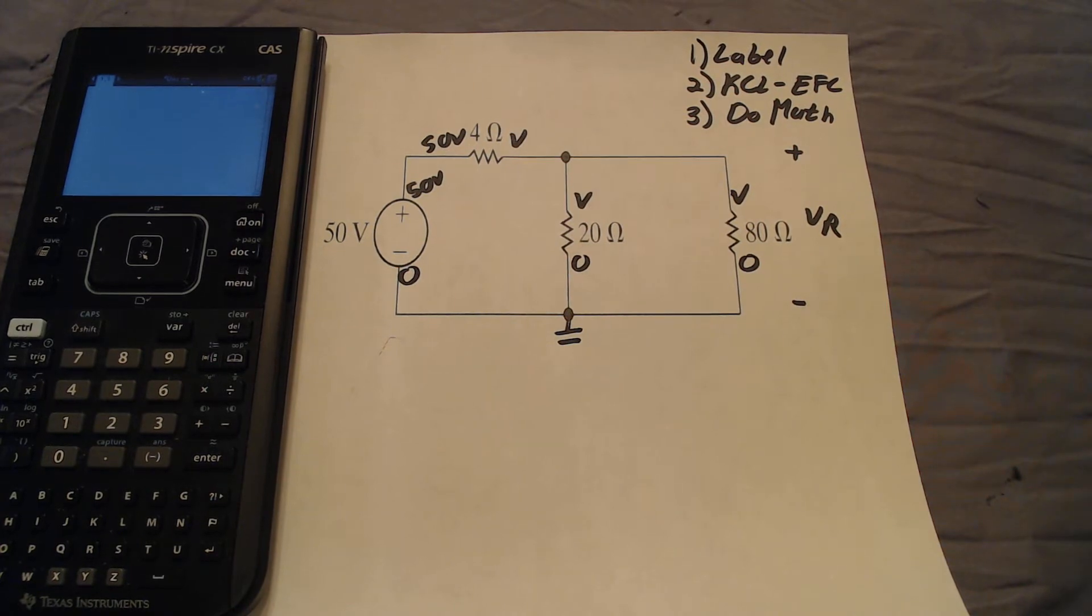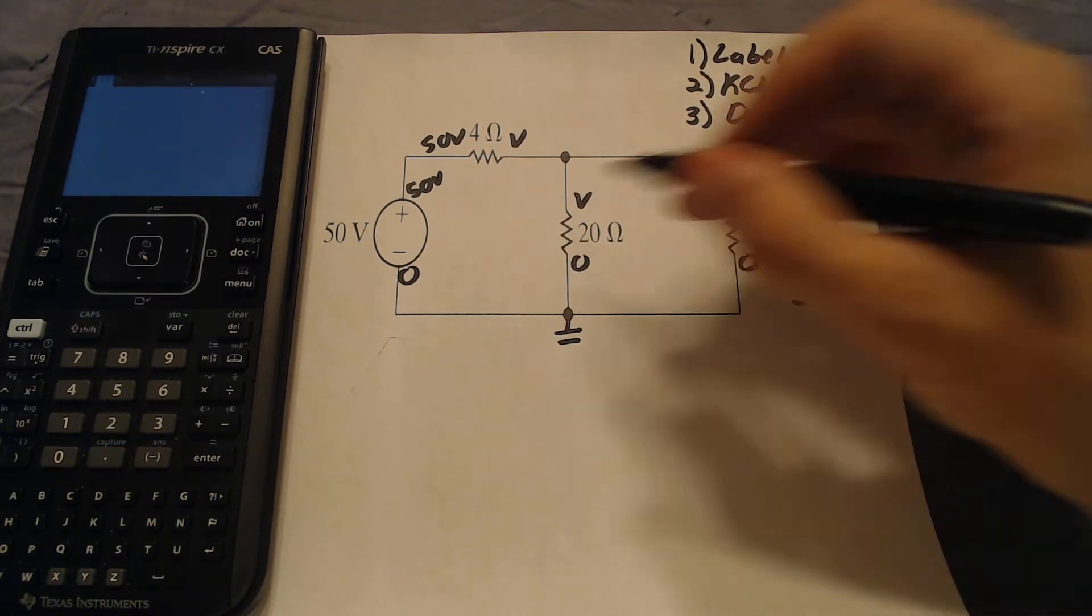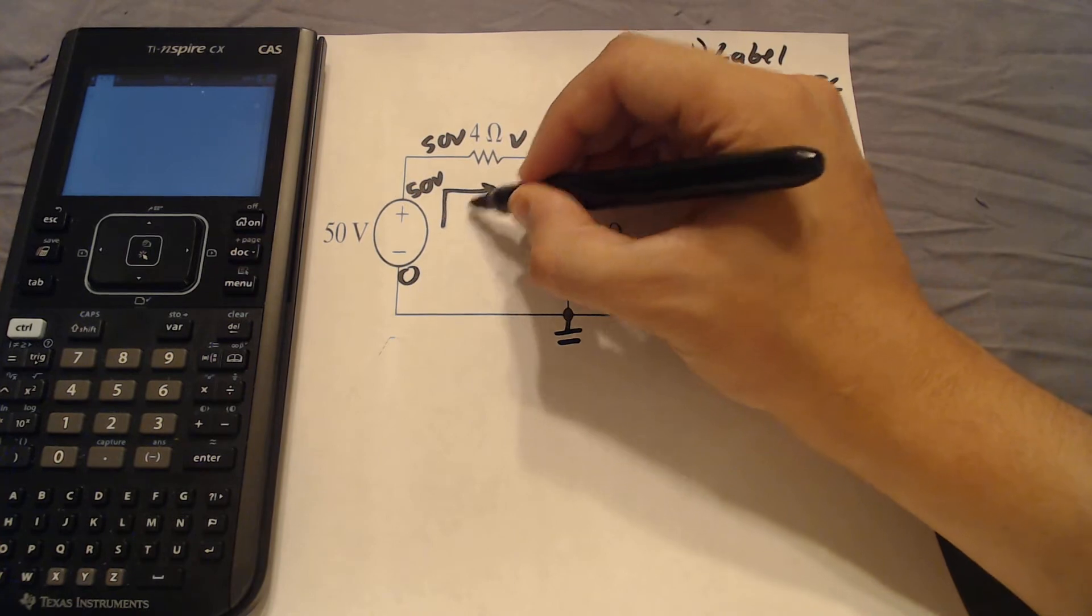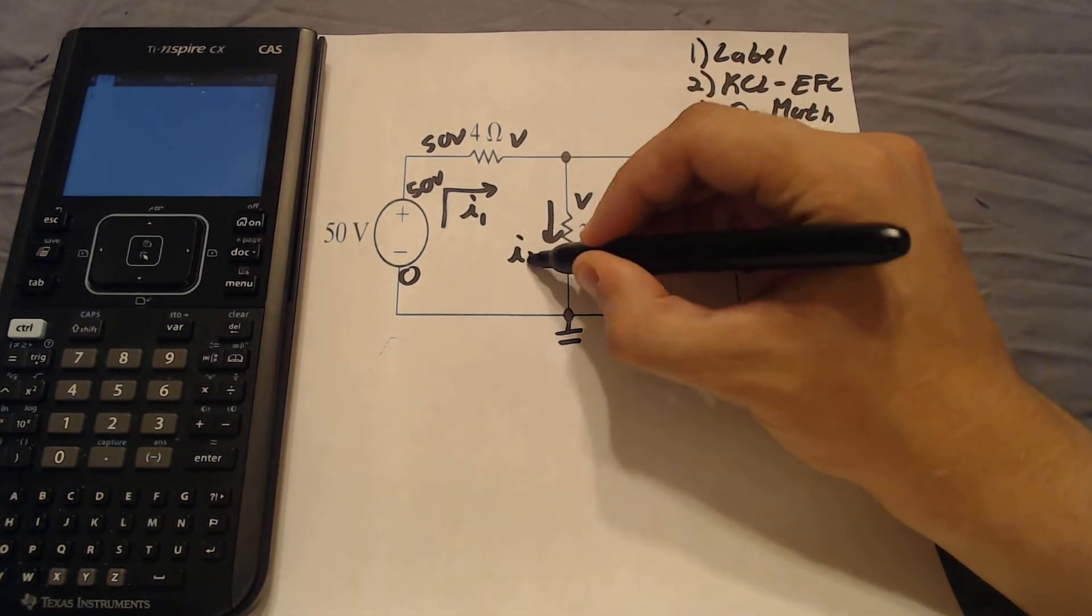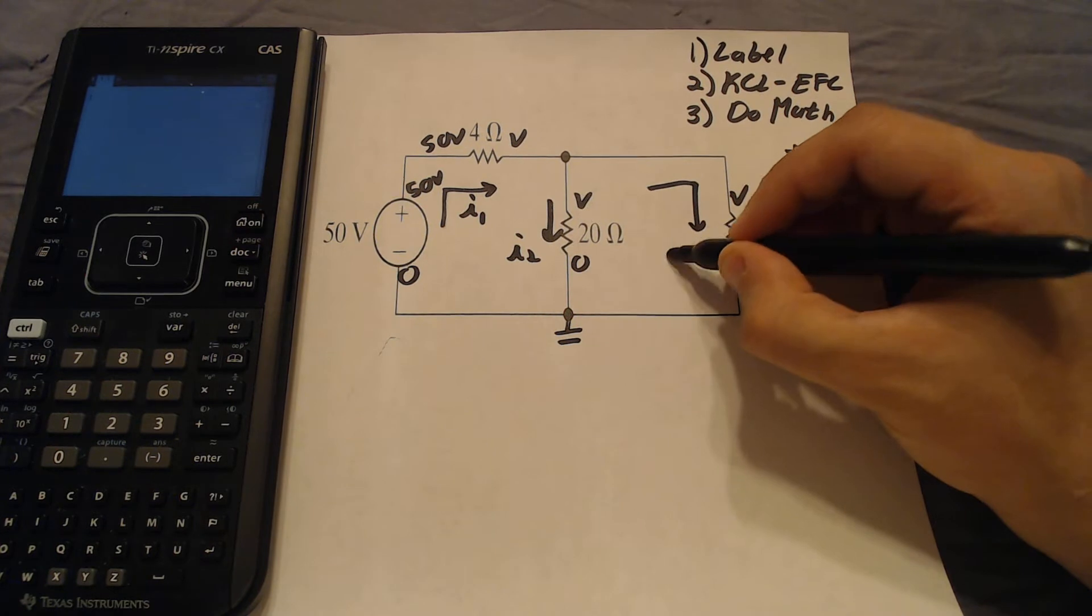So we're done labeling our voltages in this circuit, and we must move on to our currents. So there's going to be a current going this way, and I'm going to call it I1, and it's going to be a current going down, called I2. It's going to be a current going like this, called I3.